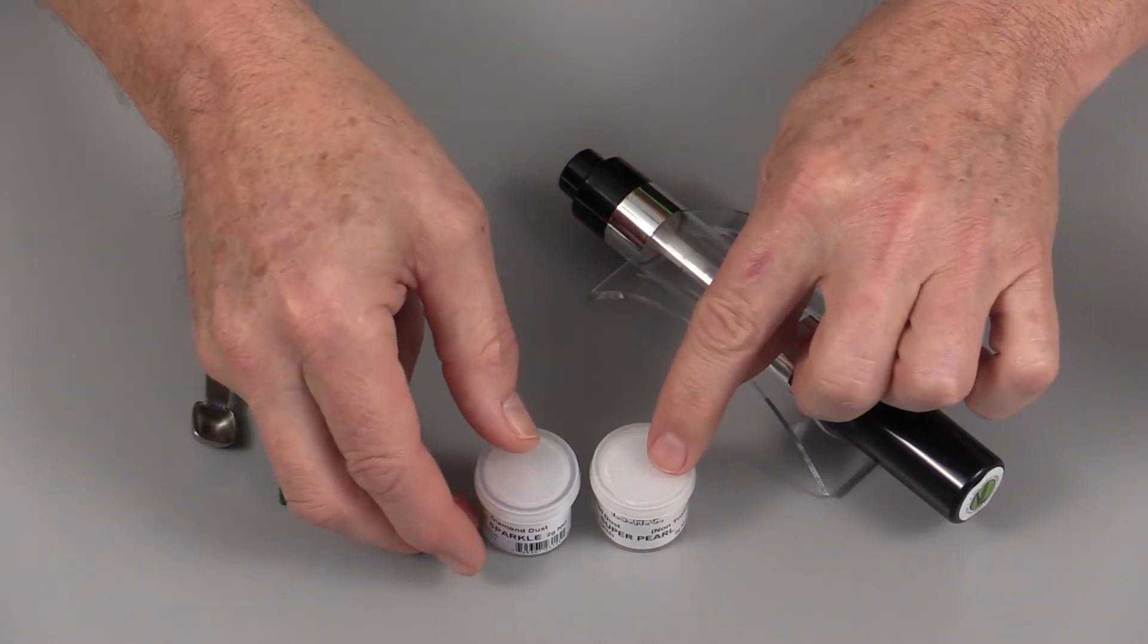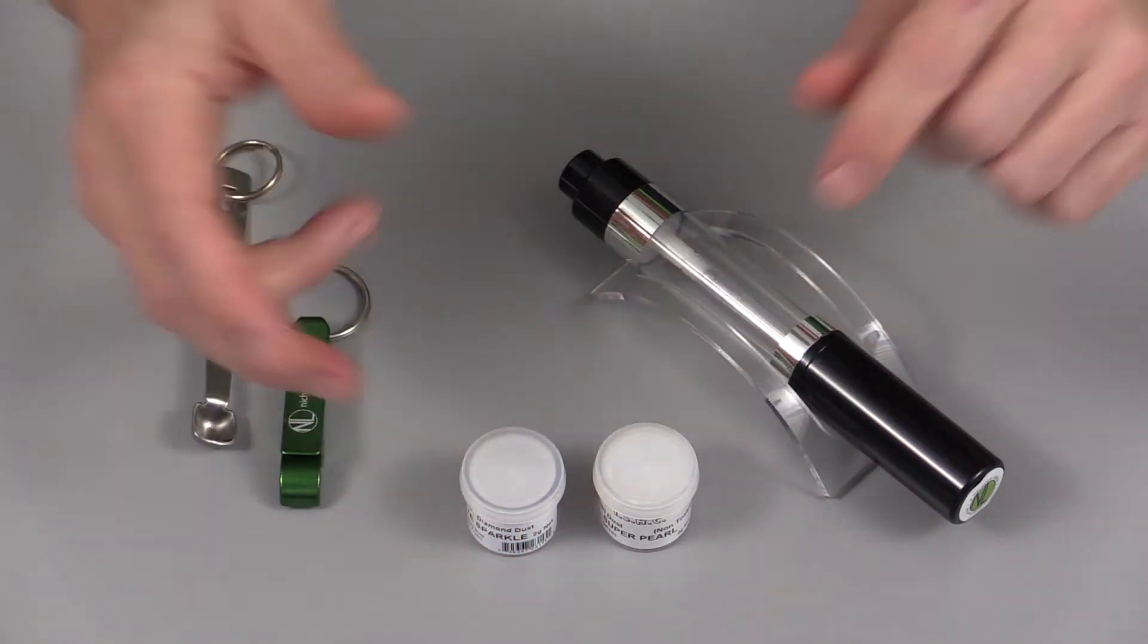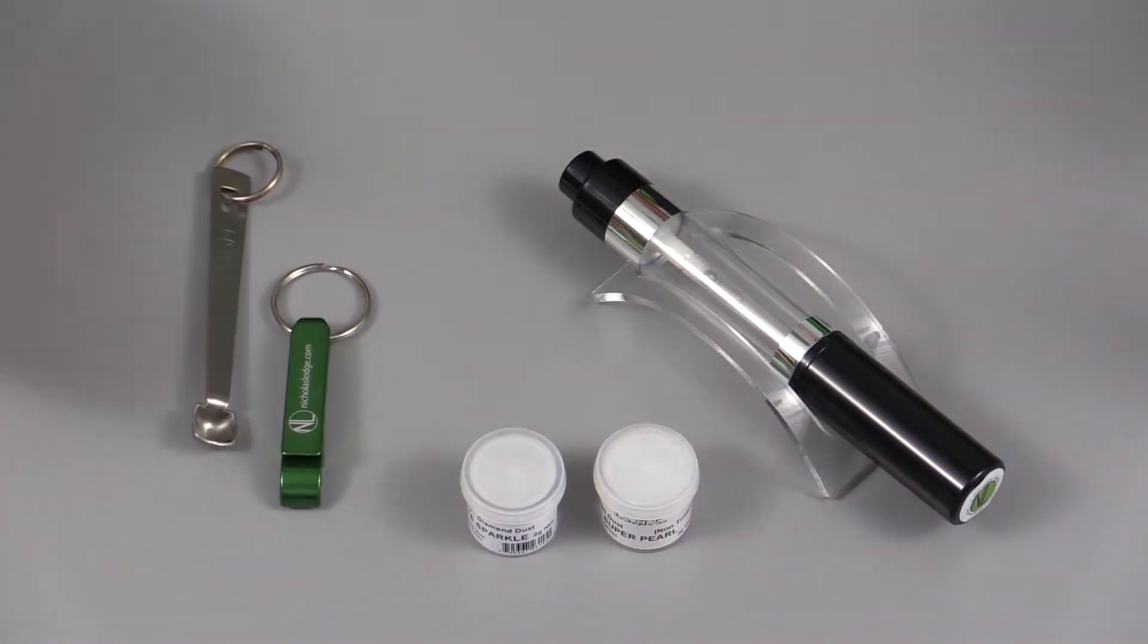Although you could use this for other colors of luster, generally white sparkle or super pearl is what you're going to be using most of the time for ribbons, bows, drapes, cake surface, etc.